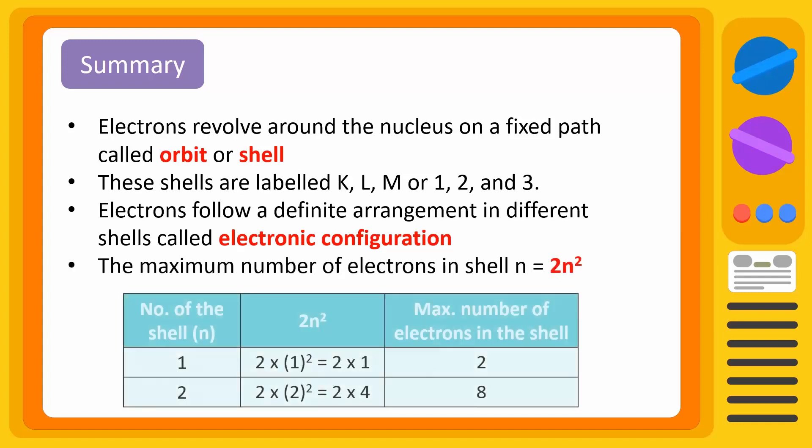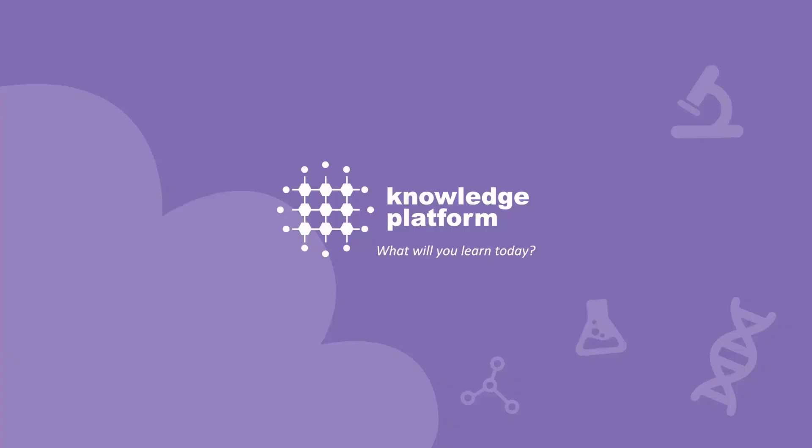The maximum number of electrons in a shell n can be calculated using the formula 2n squared.